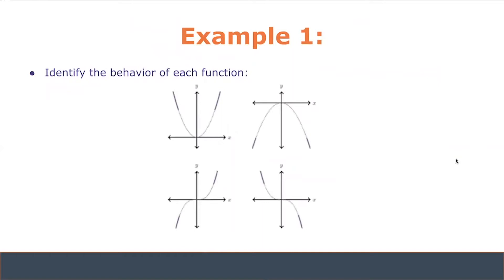For example one, we'll identify the behaviors of four basic functions using the direction and concavity descriptors mentioned earlier. I'm going to move my cursor over the increasing or decreasing areas of the graph. Beginning with the upper left graph, we judge direction by splitting it into two halves. From x equals negative infinity to x equals zero, the y values are decreasing. From x equals zero to positive infinity, the values increase. In terms of concavity, the arc opens upwards, making it concave up.